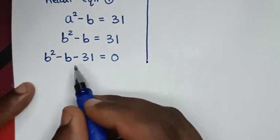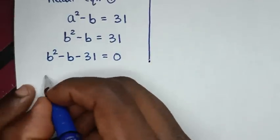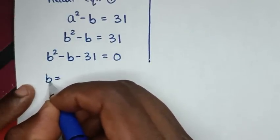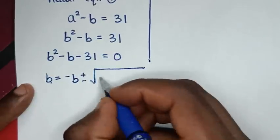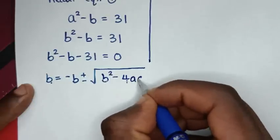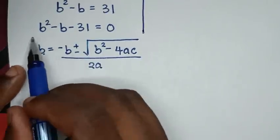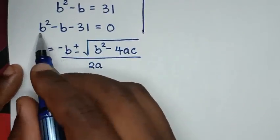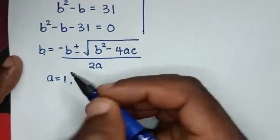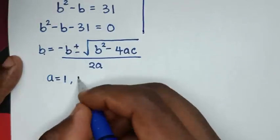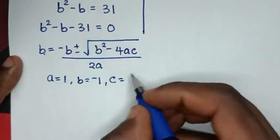To find the values of b from this quadratic equation, we'll use the quadratic formula: b equals negative b plus or minus square root of b squared minus 4ac, over 2a. From the coefficients: a equals 1, b equals negative 1, and c equals negative 31.